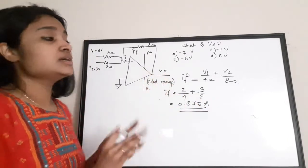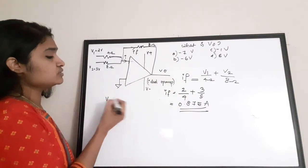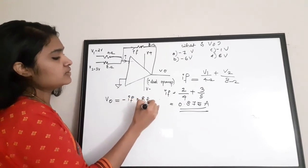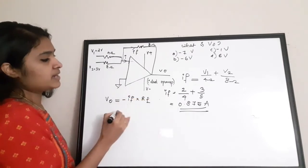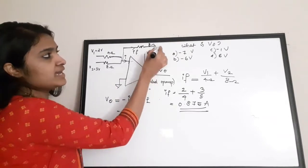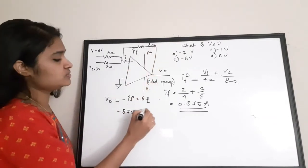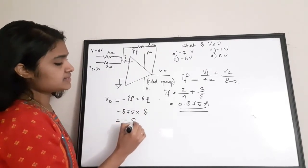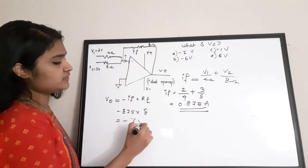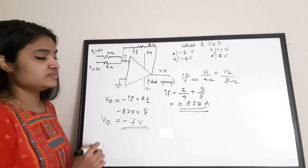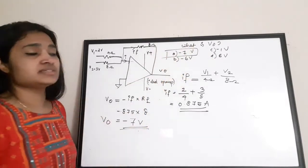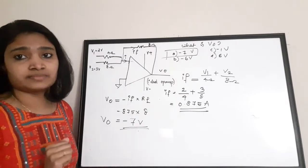Now we find Vout: Vout = −If × Rf = −0.875 × 8Ω = −7V approximately. So the output voltage is −7 volts, which is option (a). I hope you understood the concept — first identify the summing amplifier, compute If as the sum of branch currents, then Vout = −If × Rf.